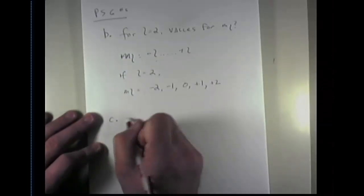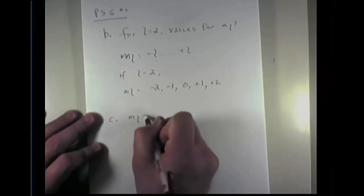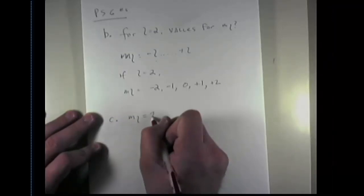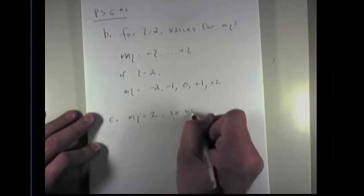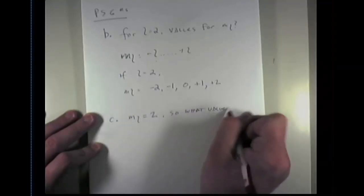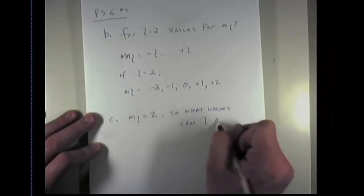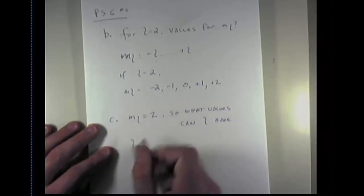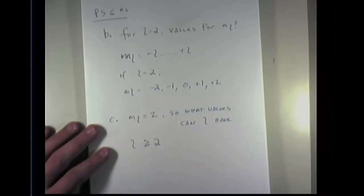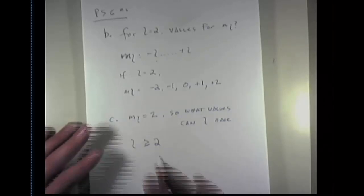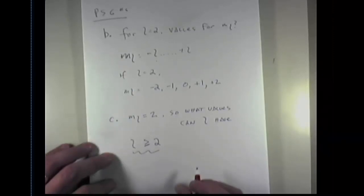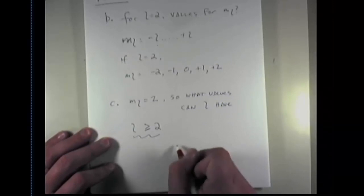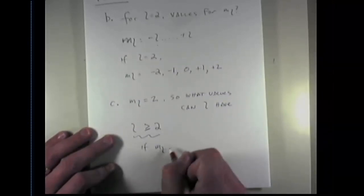Let's see if we can do the reverse. In question c, I'm given m sub l, the magnetic quantum number, as being equal to two. So what values can l have? The answer is l has to be greater than or equal to two.